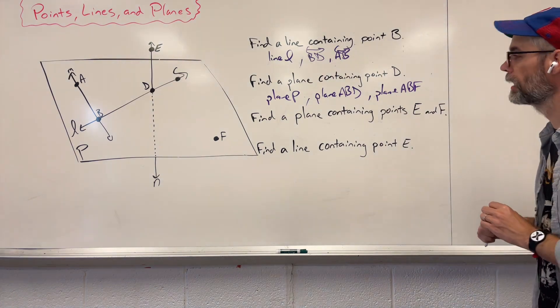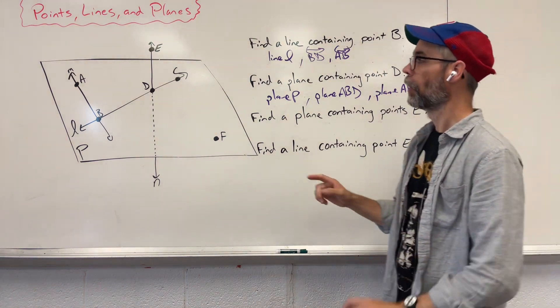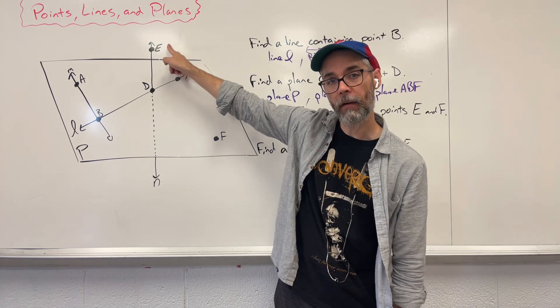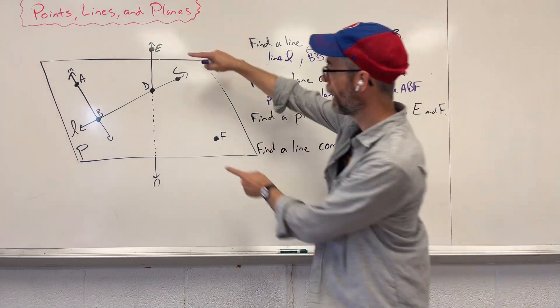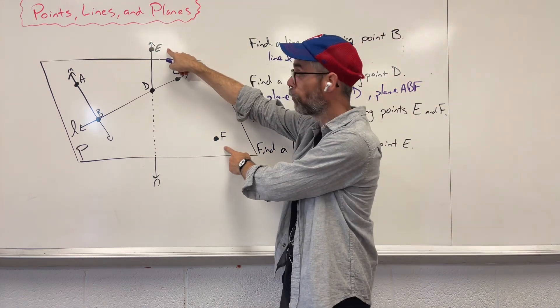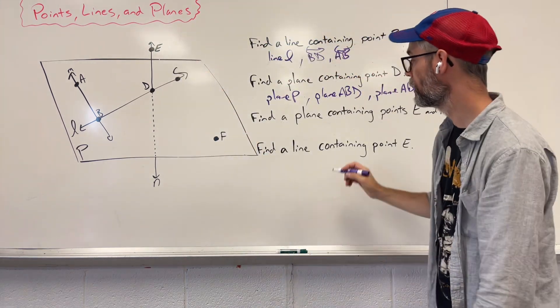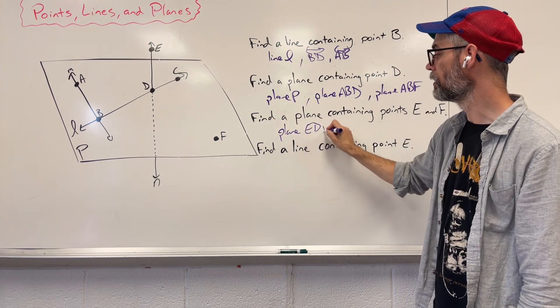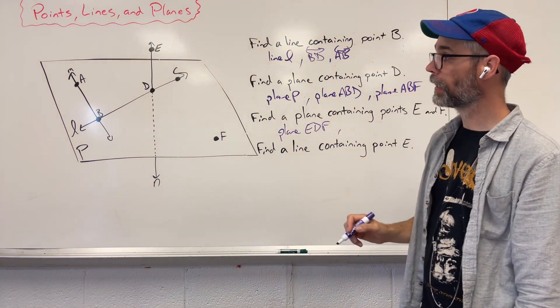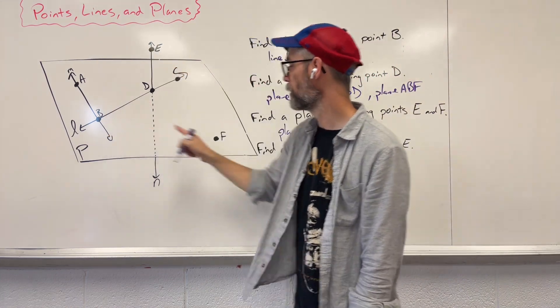Find a plane containing points E and F. All right, so E, up in the air, up in the sky. F, out here in no man's land all by itself. That's fine. I have two. I just need one more point somewhere. Why not use D? We could say plane E, D, F. We could even make out something else and say E, B, F.